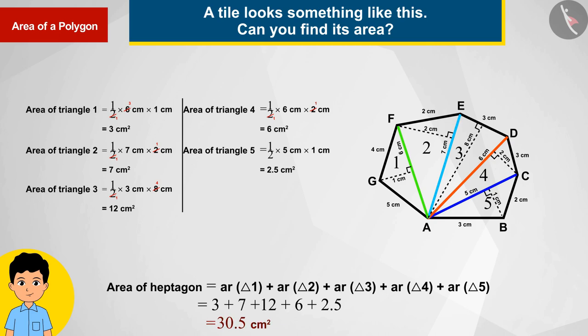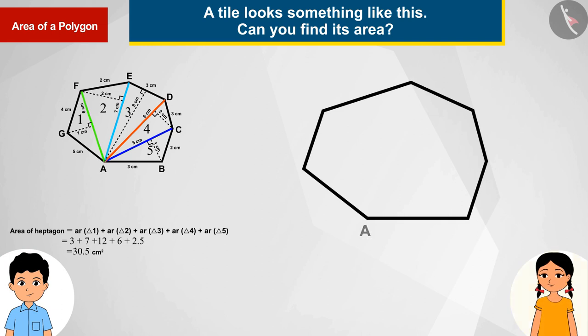Another student of the class, Seema, solves this question in this way. Seema thinks that the vertex G must be connected to vertices D and C, so we get one triangle and two trapeziums.